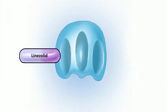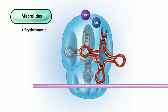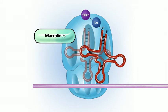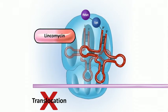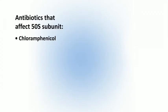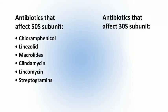So aminoglycosides and tetracyclines both work at the 30S subunit. The rest work at the 50S subunit: linezolid inhibits initiation; chloramphenicol inhibits the peptidyl transferase in the 50S — specifically the 23S rRNA; macrolides like erythromycin and azithromycin bind to the 50S and inhibit translocation; clindamycin and lincomycin (both lincosamides) bind to the 50S and block translocation; and the streptogramins do essentially the same thing.